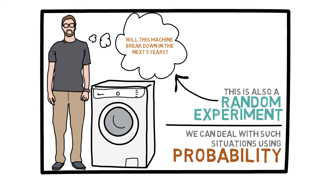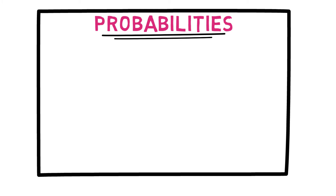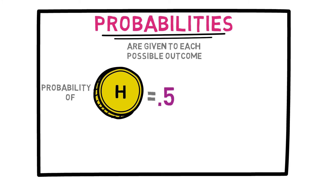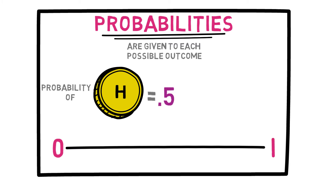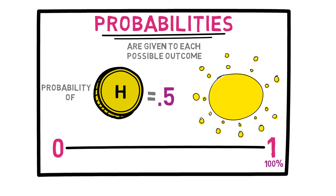Our goal in this course is to learn how to use probability and randomness effectively and to our advantage. Now that we know what a random experiment is and how common they are in everyday life, we can discuss probabilities. In probability theory, we assign a probability to each possible outcome of a random experiment. So when you toss a coin, we assign a probability of 0.5 to heads. All probabilities are values between 0 and 1. A probability of 1 is the same as 100% — if we are 100% sure something is going to happen, its probability is 1. For instance, the probability that the sun rises tomorrow is 1. And if we are certain that something is not going to happen, the probability is 0.